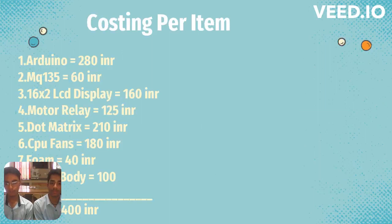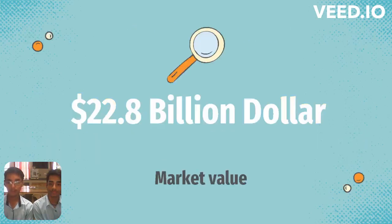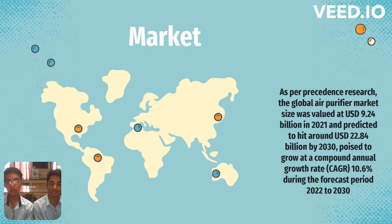As you can see, comparable market products cost around 14,000 rupees, but ours comes at 10 times lower than that. We are making the prototype for 1,400 rupees and we can probably launch it in the market for around 1,500 to 2,000 rupees. The market is offering similar products at 20,000 rupees, but we are offering the exact same product with more advanced features for just about 1,500 Indian rupees. The global air purifier market was 9.24 billion USD in 2021 and is projected to reach 22.84 billion USD by 2030, and we aim to capture that market.